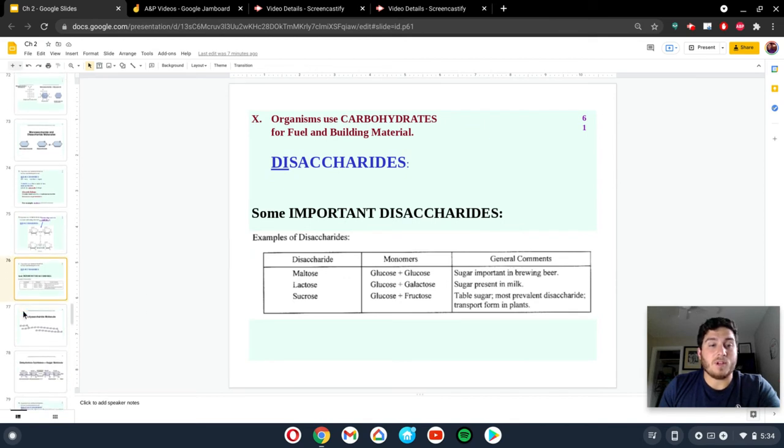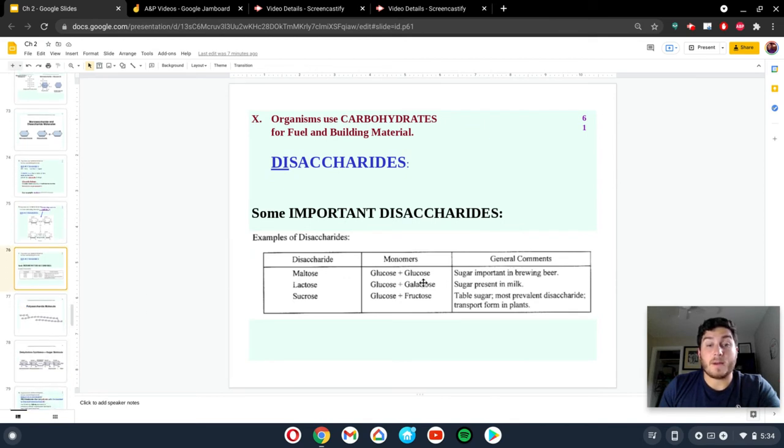Here are a couple examples of disaccharides and the monomers that make them up. Maltose is an example of a disaccharide, and it is two glucoses put together. What if you change the monosaccharides you're linking together, such as lactose? You can take a glucose molecule and bind it with a galactose molecule. That's lactose. Sucrose, glucose and fructose. They make slightly different types of sugars with different properties, and they can be used for different things.